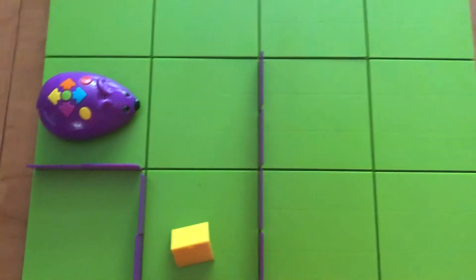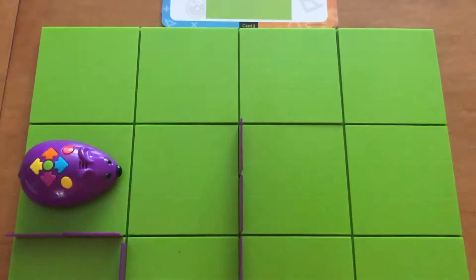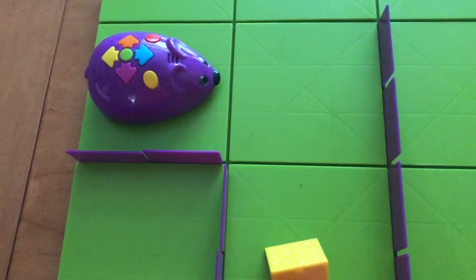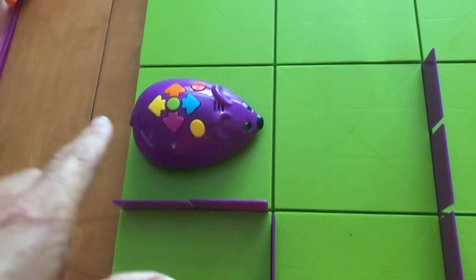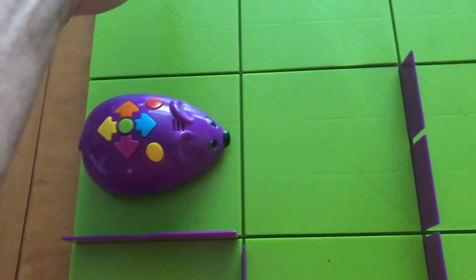I'm going to set up my grid, and it's a 4x4 grid. There's 16 squares in this grid. The mouse is starting in row two, column one.